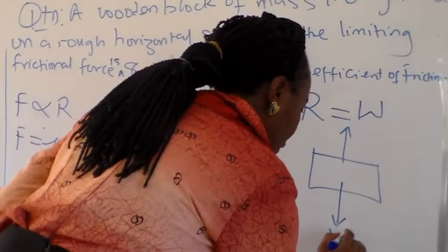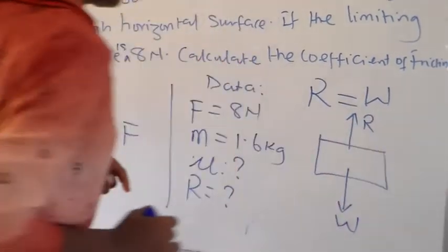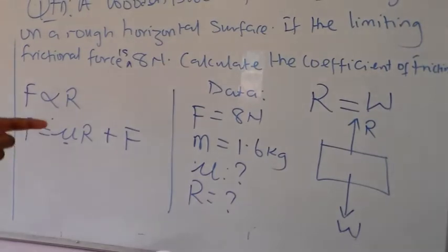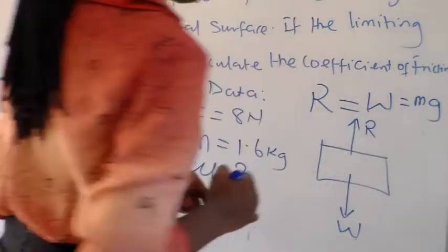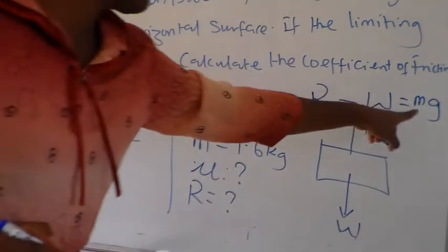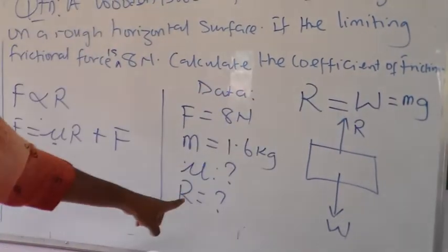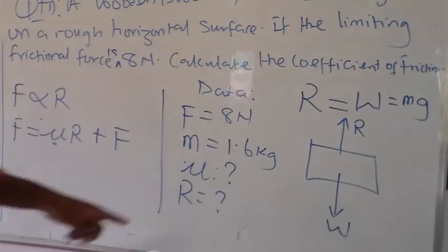So, if our weight is directed downward, our reaction force is directed upward. So, given the formula for weight as mass, weight is equal to the mass times acceleration due to gravity. So, from here, we can obtain the value of our reaction force.